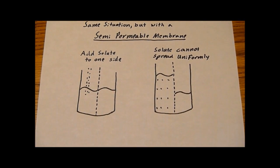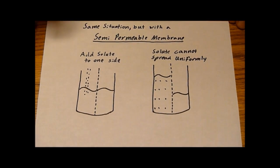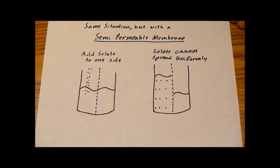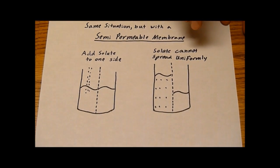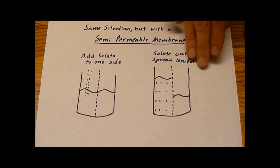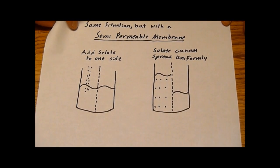However, if you do the same situation but with a semi-permeable membrane and only add solute to one side, it isn't allowed to spread out uniformly. So what it does is the water or the solvent from one side goes to the side of the solute, increasing the pressure.